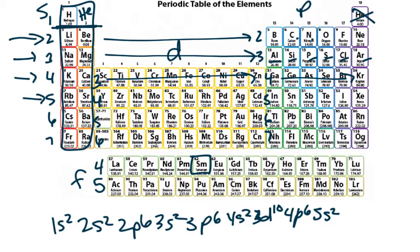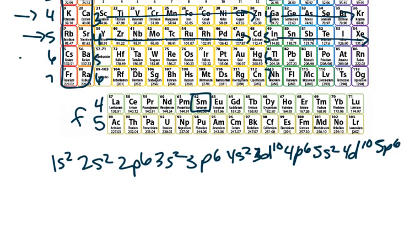And then 4D10, and then 5P6. And then we come down here and we're at 6S. So I'm going to write 6S2 right here, because we're going across 2.